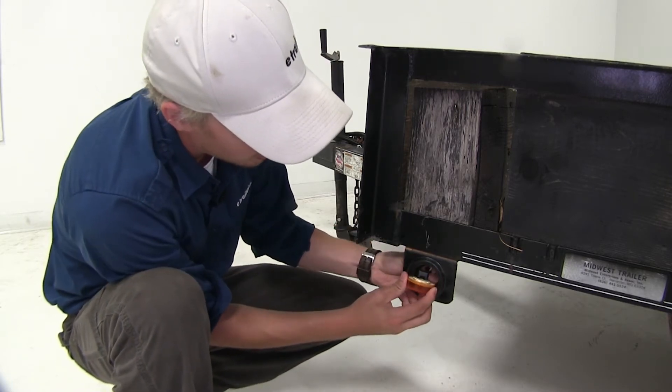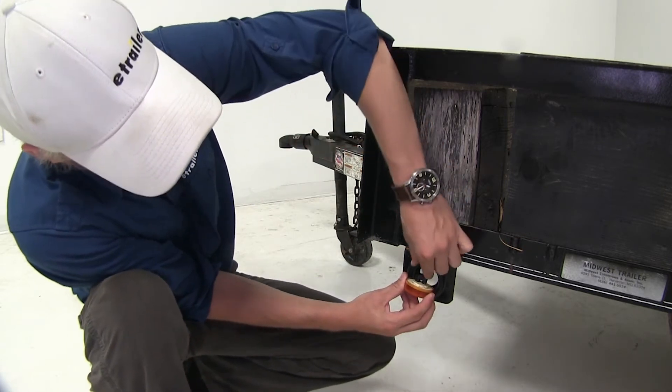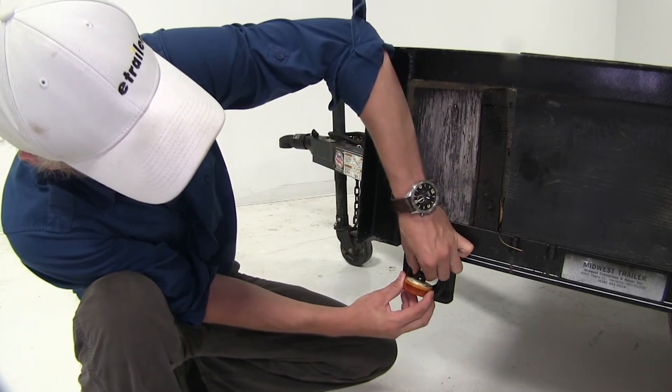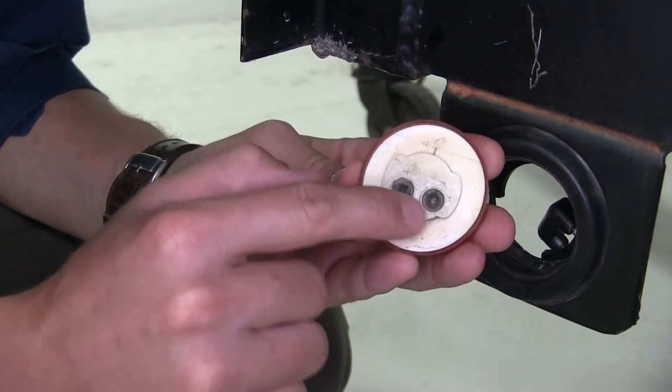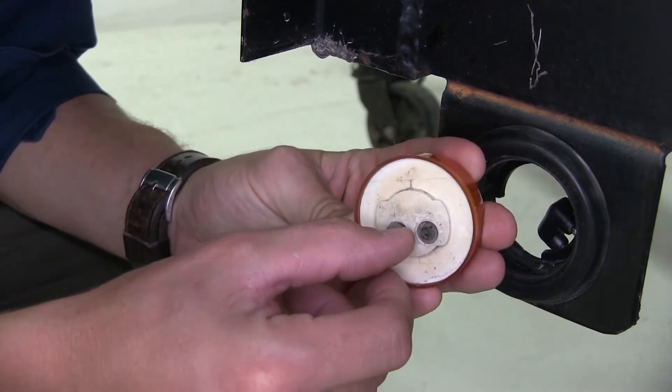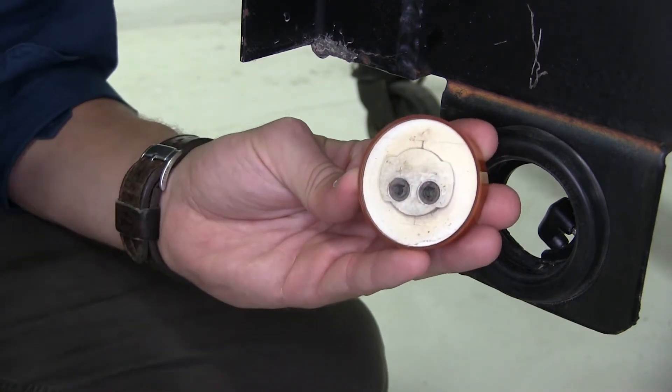You can see on the back side, it's going to reveal our connection. We're just going to pop that loose. So as you can see, our connections are dirty, and they're even split a little bit, which could cause the light not to work.